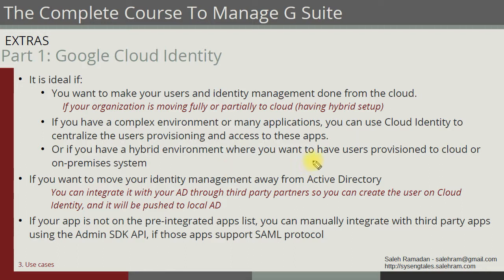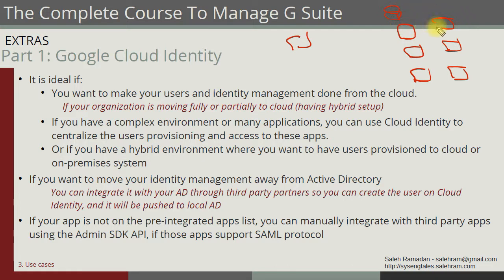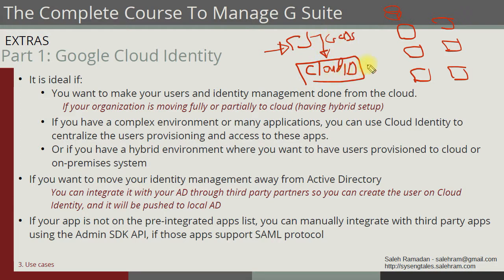To explain this simply: assume your environment has Active Directory and several applications — say app one through app three — each with its own user database. You have to manage access for users across six different applications plus Active Directory. What you can do is use Cloud Identity and sync users from Active Directory to Cloud Identity using GCDS. This will work as long as these applications support integration through SAML protocols.